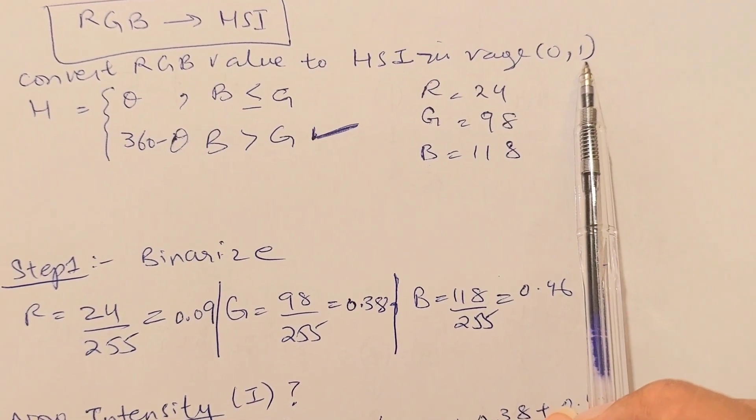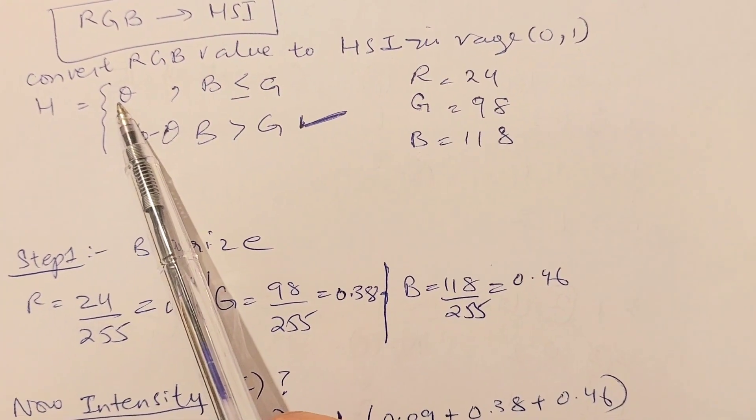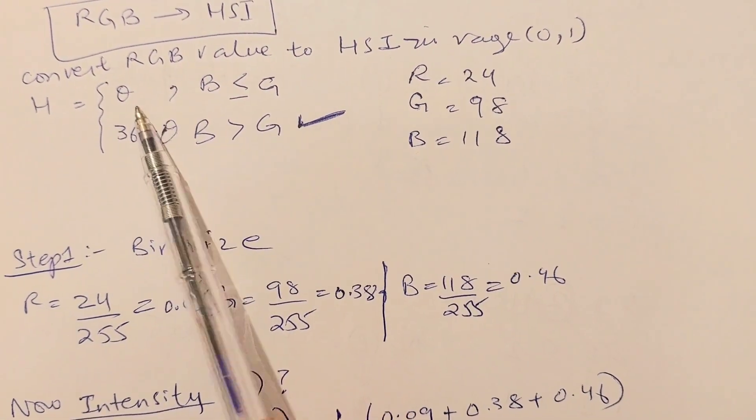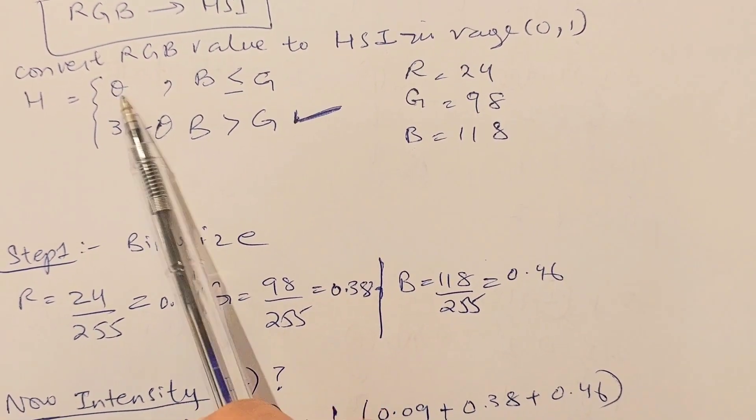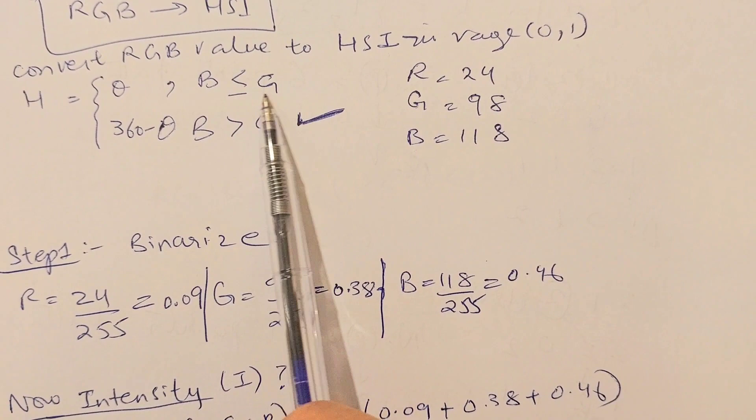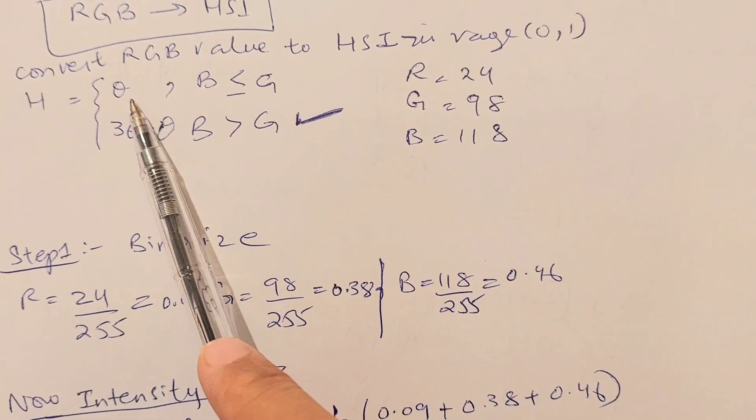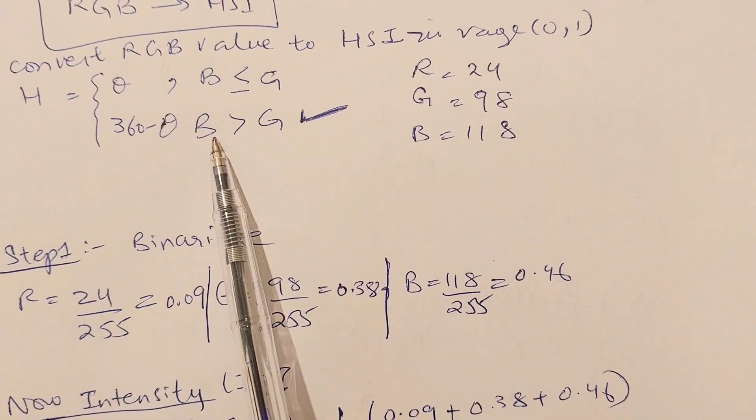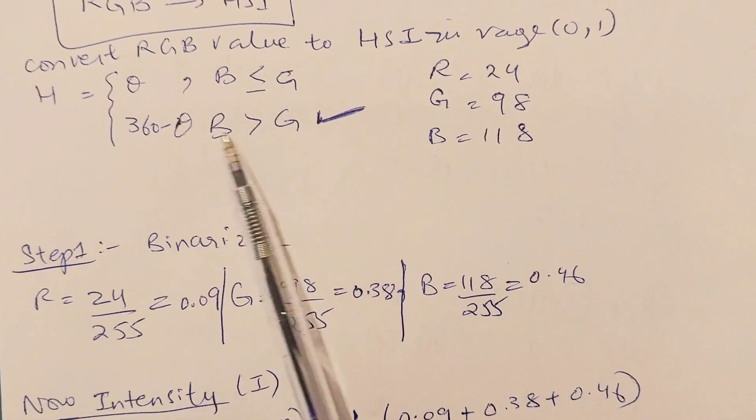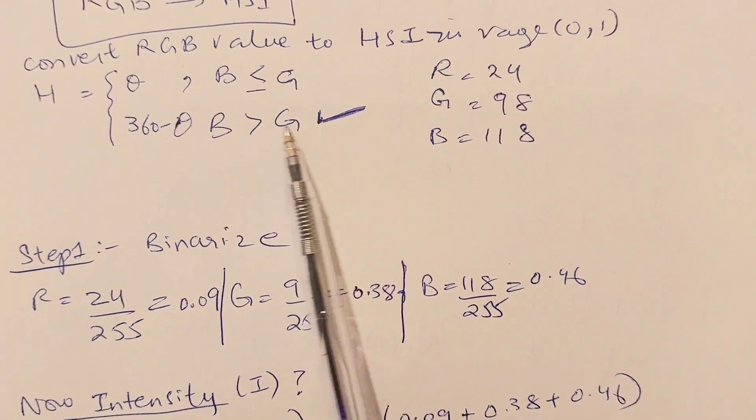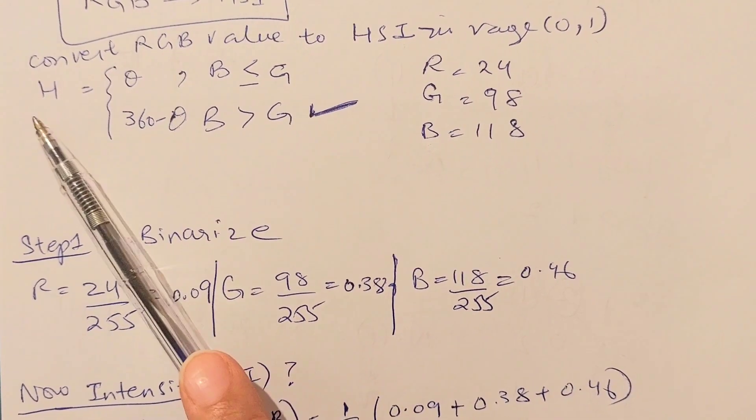First, let's see what the formulas are. The formula for hue H equals theta, because hue is always represented as an angle in terms of degrees. If the value of B is smaller than or equal to G, then hue is simply theta. But if the value of B, the blue pigment value, is higher than the green one, then hue is equated as 360 minus theta.